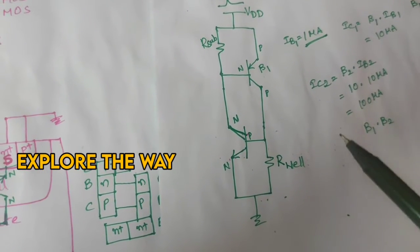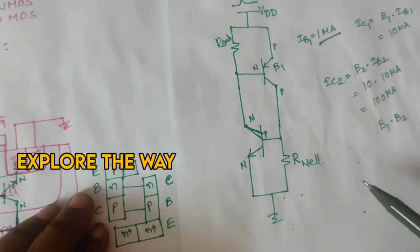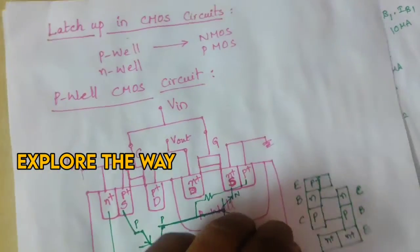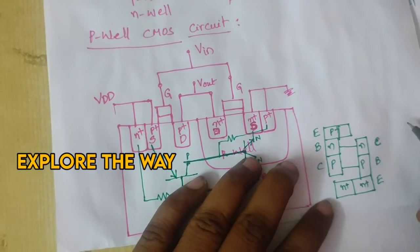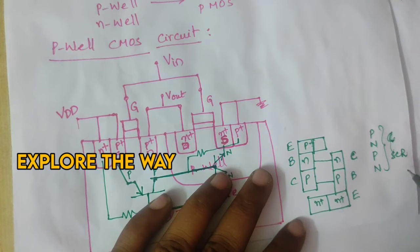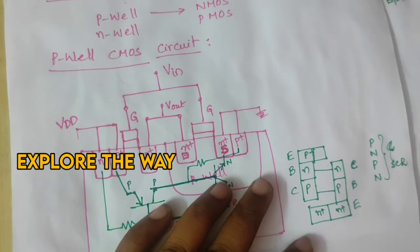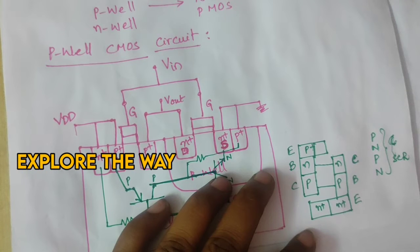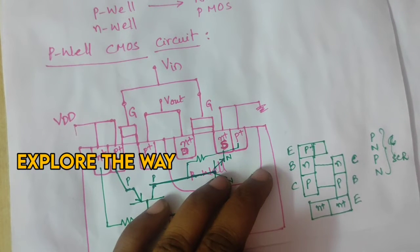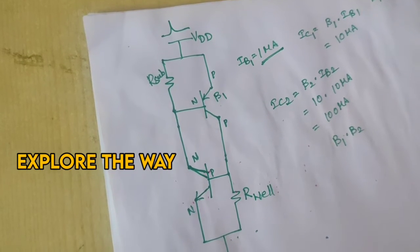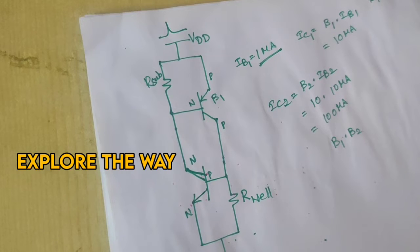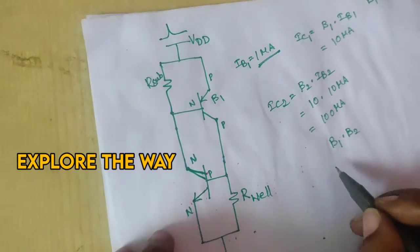Eventually, the CMOS device will be damaged. The structure between VDD and ground acts like a PNPN device, which is called an SCR. Once an SCR is turned on, a heavy amount of current passes through it. The only way to turn it off is to cut down the power supply — by which point it has already damaged the CMOS device. This is the failure condition in CMOS circuits, and we call it latch-up.